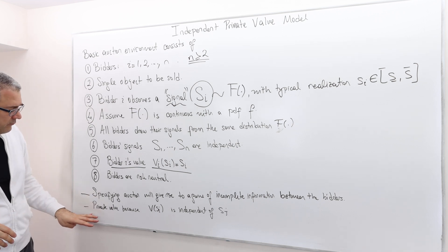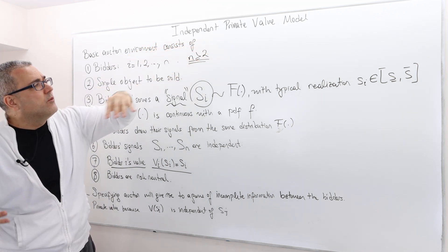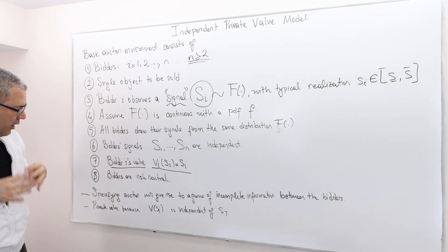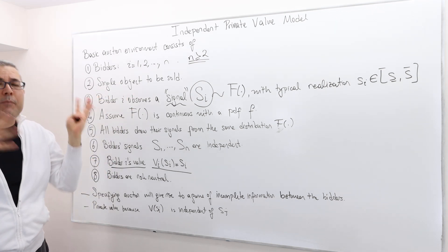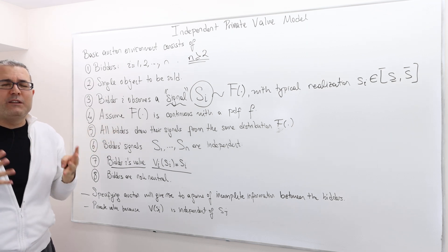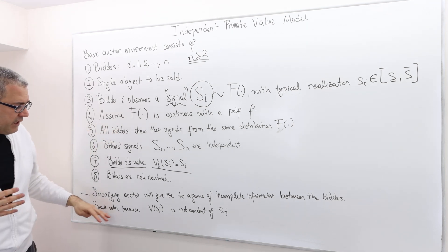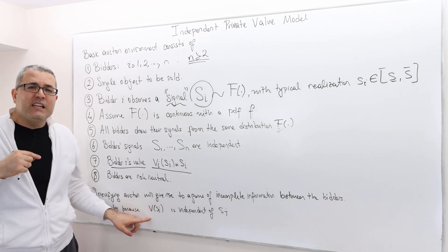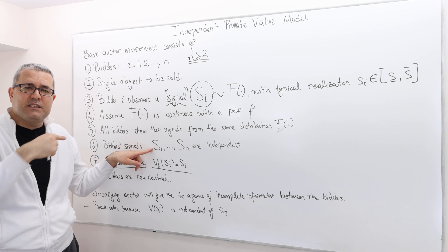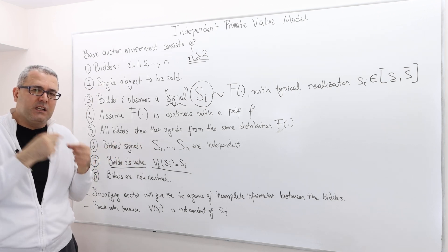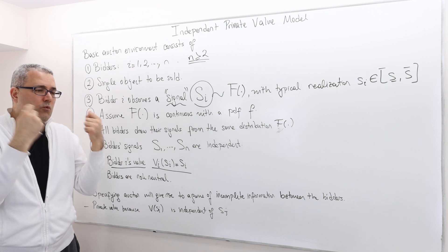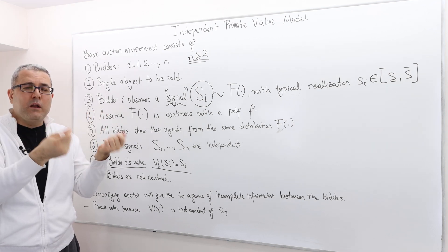You may wonder, why is it independent value, but why do we call it private value? Well, the reason is each player's or each bidder's signal is independent of the other guy's signal. So once I receive a signal, I say this object is worth, I don't know, $1 million.